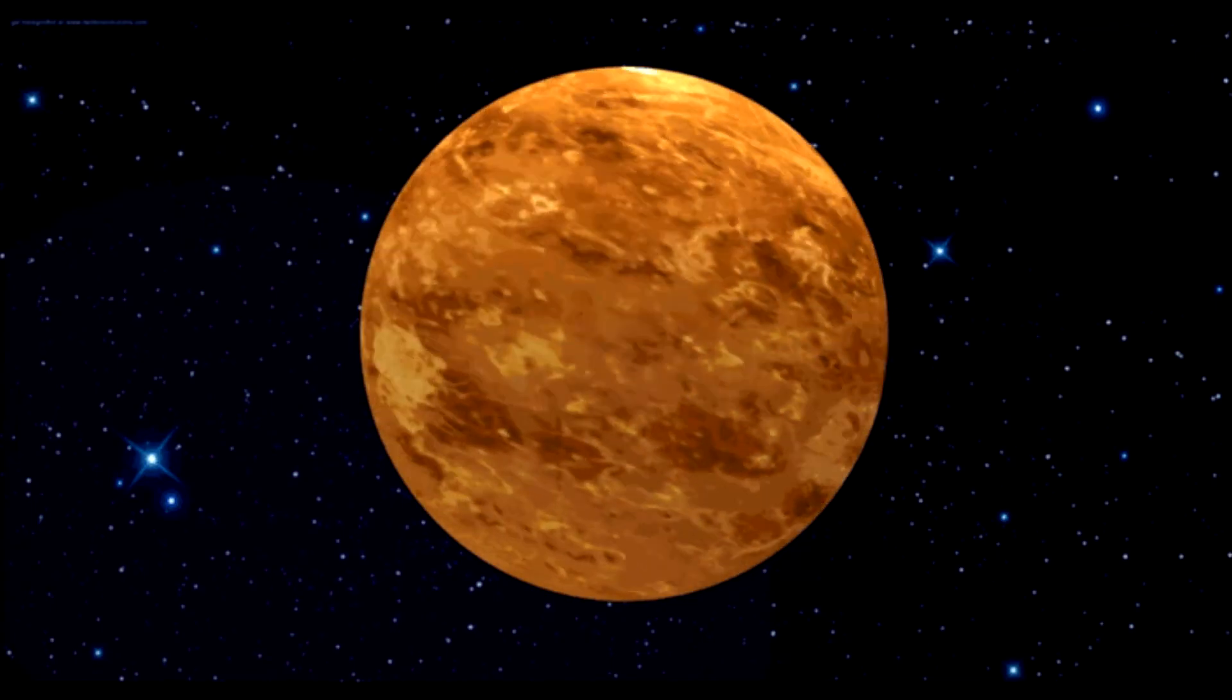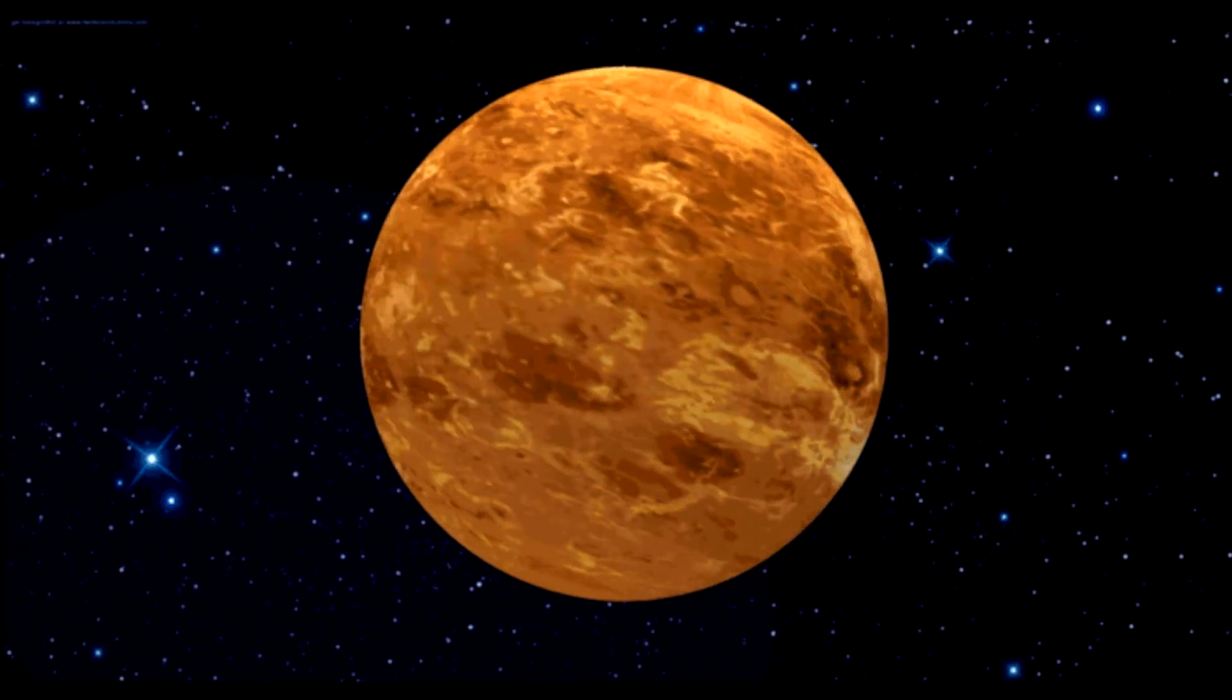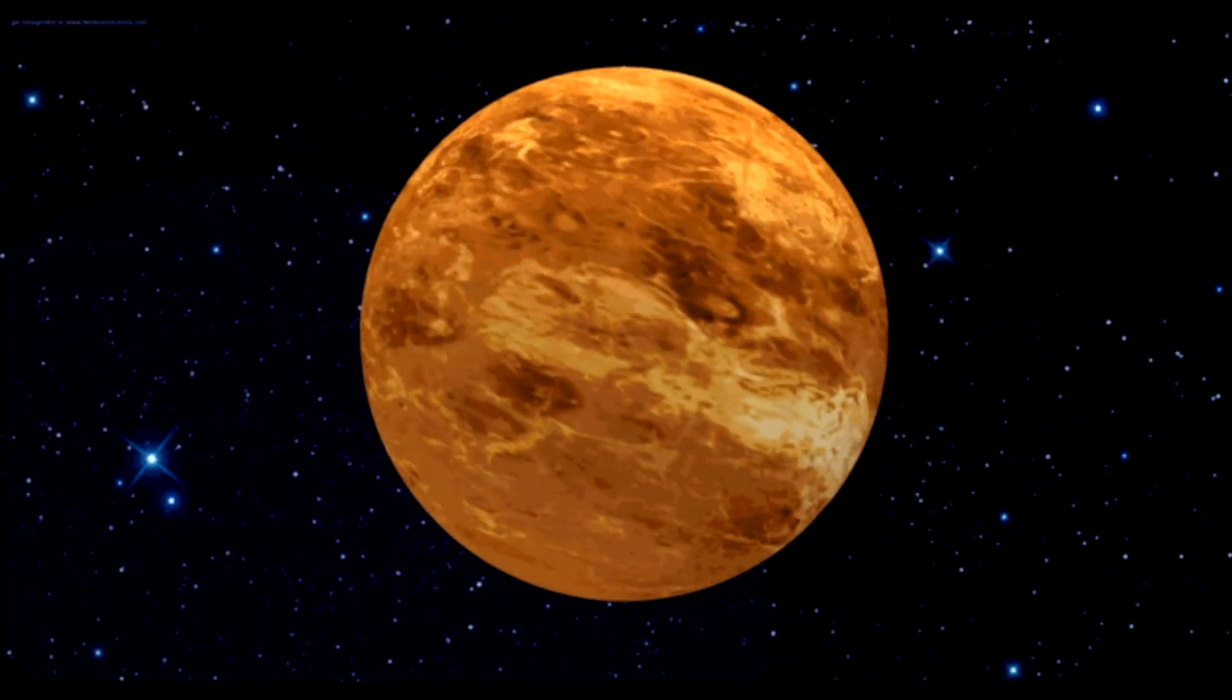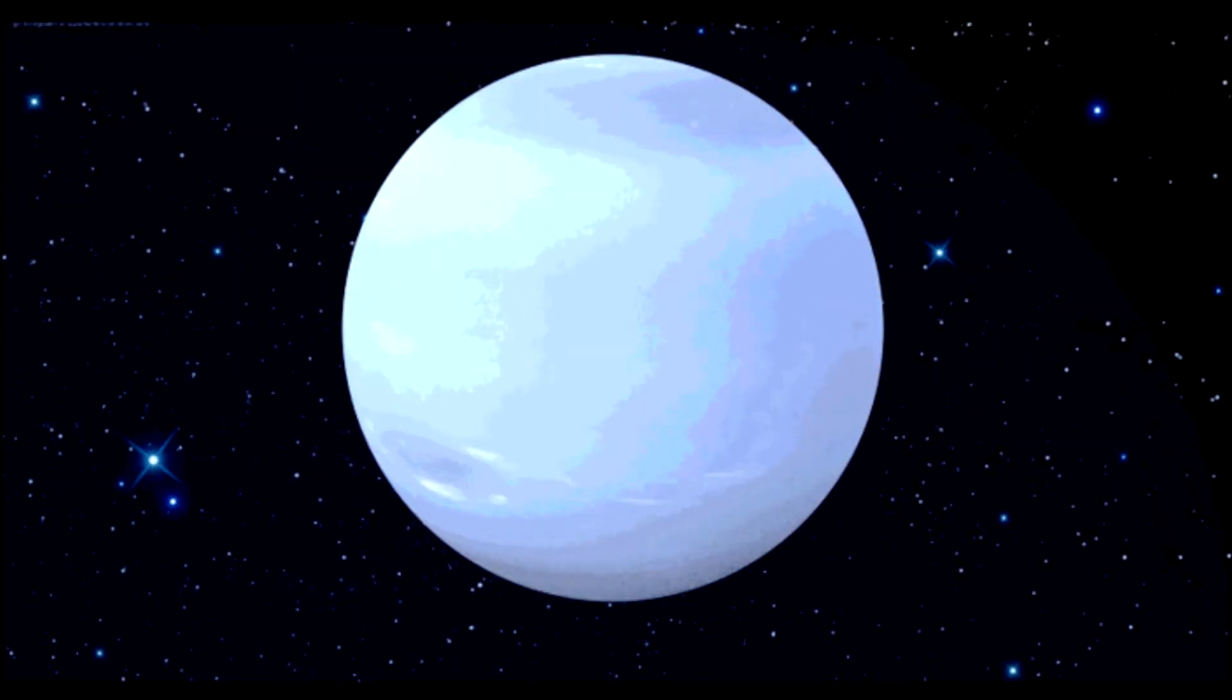Coldest and the hottest. By temperature, the closest planet to sun, Mercury, is the hottest planet in our solar system, while the furthest planet, Neptune, is the coolest.